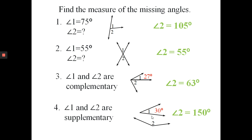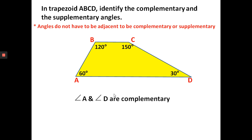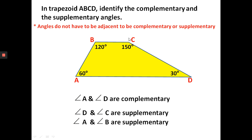That example also points out that supplementary angles don't have to be adjacent. Now with a trapezoid — a quadrilateral with four angles — given four angle measurements, find which are complementary and which are supplementary. Angles A and D add up to 90 degrees, so those are complementary. For supplementary pairs, D and C equal 180 degrees (150 + 30), and A and B equal 180 degrees (60 + 120). This shows angles don't have to be adjacent to be complementary or supplementary.